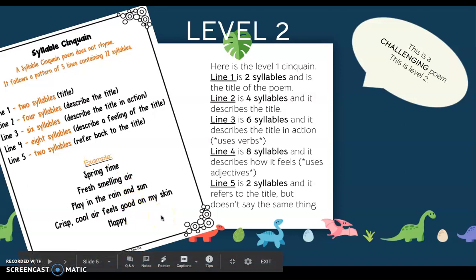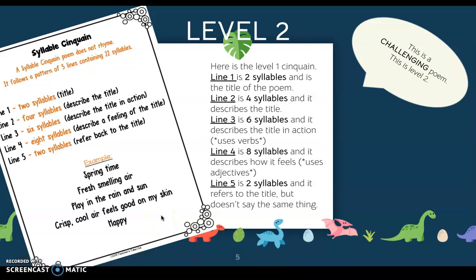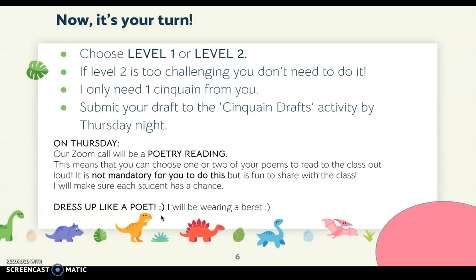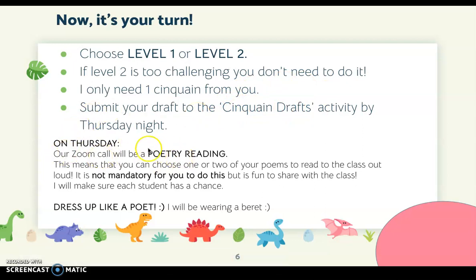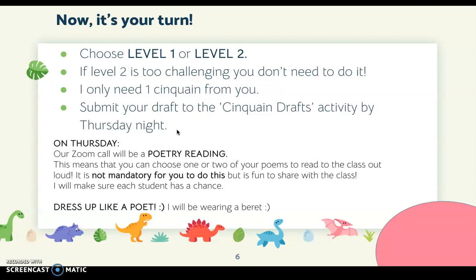This is a challenge. If you think it's too difficult, you don't have to do it — you can do level one. This is just if you want to extend your knowledge and try something new using the syllables we learned last week. So now it's your turn. Choose level one or level two. You only need to submit one cinquain to the cinquain drafts activity by Thursday night. On Thursday, our Zoom call will be a poetry reading — you can choose one or two of your poems to read to the class. You don't have to do this if you're not comfortable, but it's really fun to share. Your challenge is to dress up like a poet — I'm going to wear a beret. Have fun!